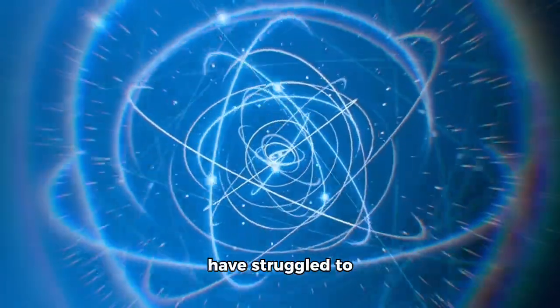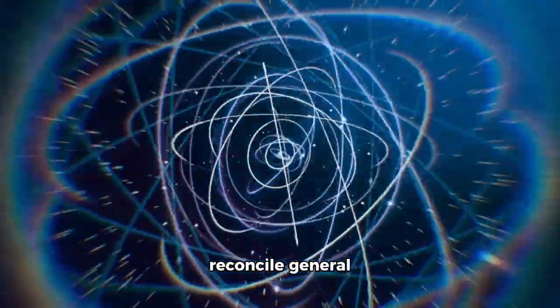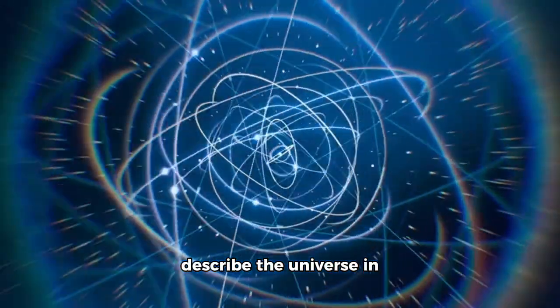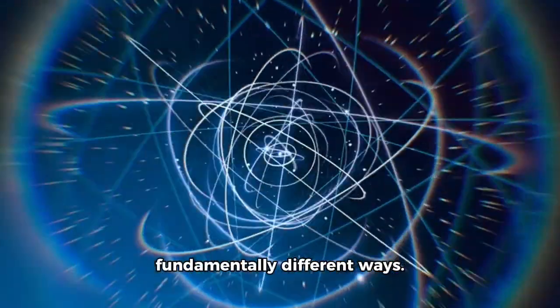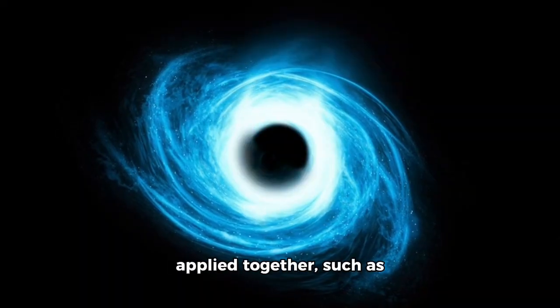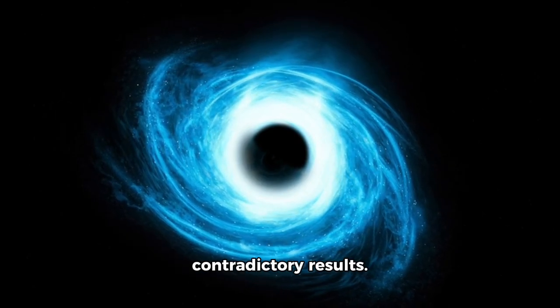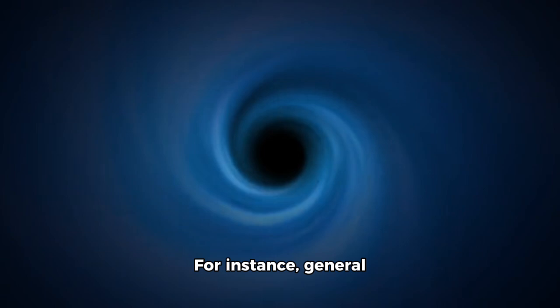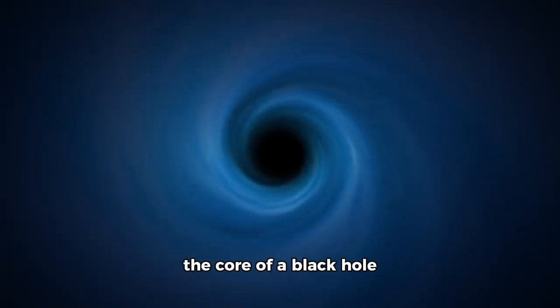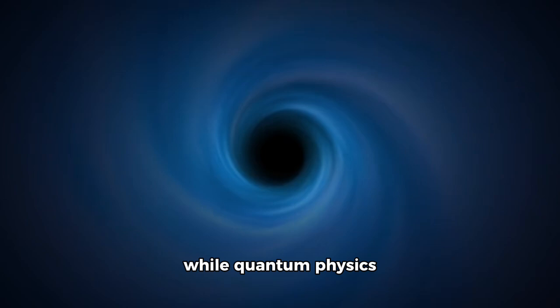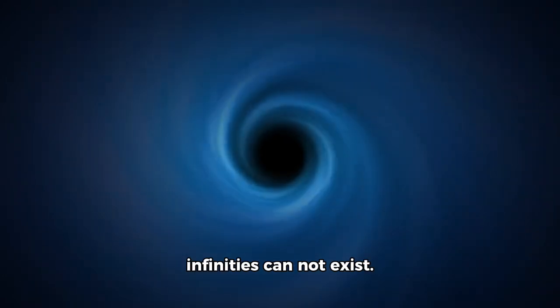Until now, scientists have struggled to reconcile general relativity and quantum physics because they describe the universe in fundamentally different ways. When the two theories are applied together, such as in the study of black holes, they often produce contradictory results. For instance, general relativity predicts that the core of a black hole is infinitely dense, while quantum physics suggests that such infinities cannot exist.